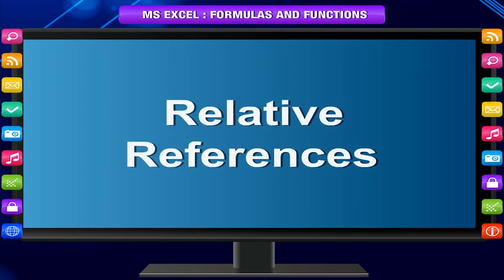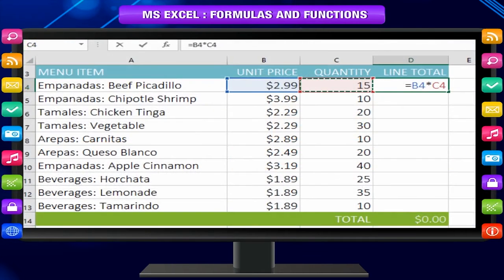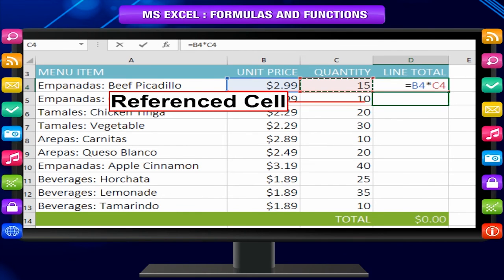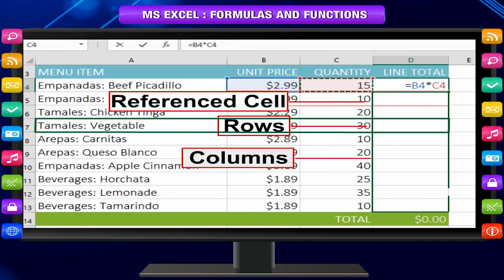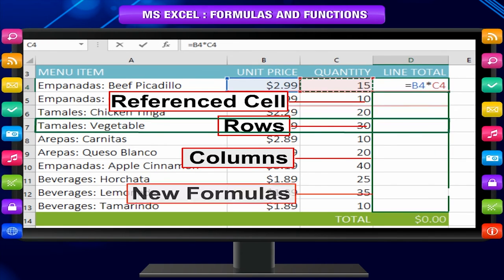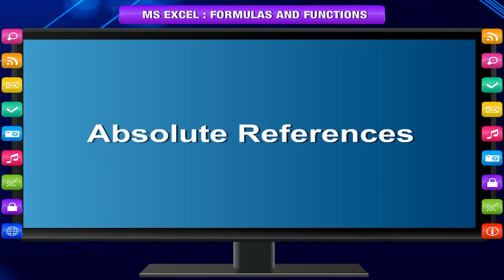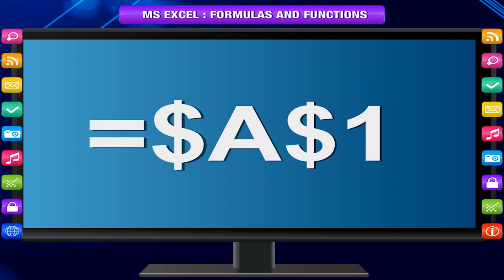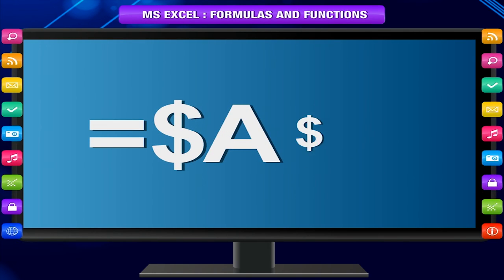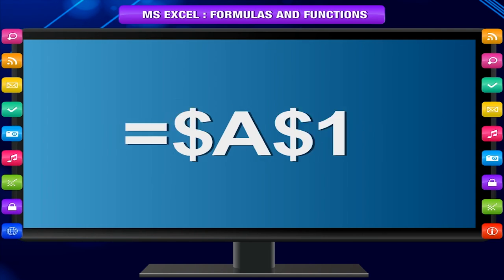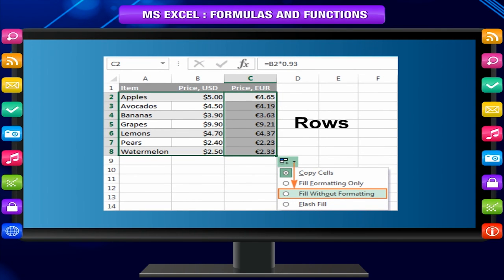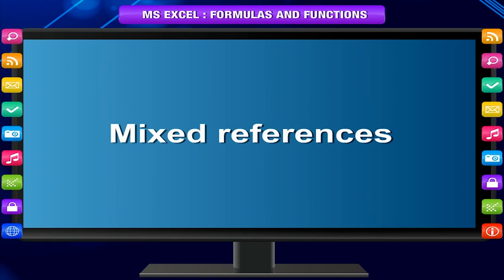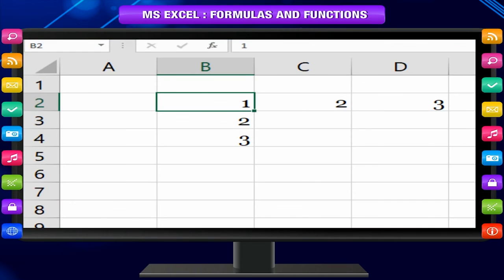The difference between absolute, relative, and mixed references. Relative references: A relative cell reference in a formula is based on the relative position of the cell containing the formula and the referenced cell. If the position of the formula changes, the reference also changes. If you copy or fill the formula across rows or down columns, the reference automatically adjusts. By default, new formulas use relative references. Absolute references: We put a dollar sign before the column letter and before the row number to make the reference absolute, such as $A$1. An absolute cell reference always refers to a cell in a specific location. If you copy or fill the formula, the absolute reference does not adjust.